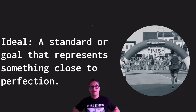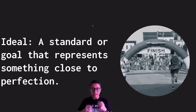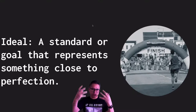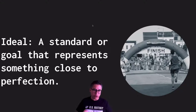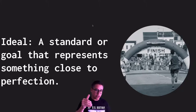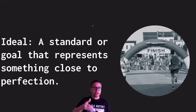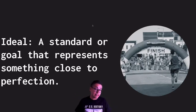The first thing we should look at is the definition of what an ideal is. An ideal is a standard or a goal that represents something close to perfection. I use the analogy of a finish line to visualize this: imagine you're in a race and every time you get close to the finish line it moves a little further away. That's kind of like an ideal — a goal you set so you can be better than before. We don't ever really reach an ideal, but it improves us as we strive toward it.